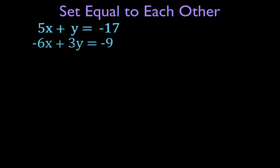We are going to do that by setting them equal to each other. The only way we can do that is if we solve both equations for the same variable — we can solve both for x, or both for y, it doesn't matter. In this case, we have this lone y here, and you can see we have 6, 3, and 9, which are all multiples of 3. So it's going to be easiest to solve the first equation for y, then take the second equation and solve it for y as well, and then set them equal to each other.